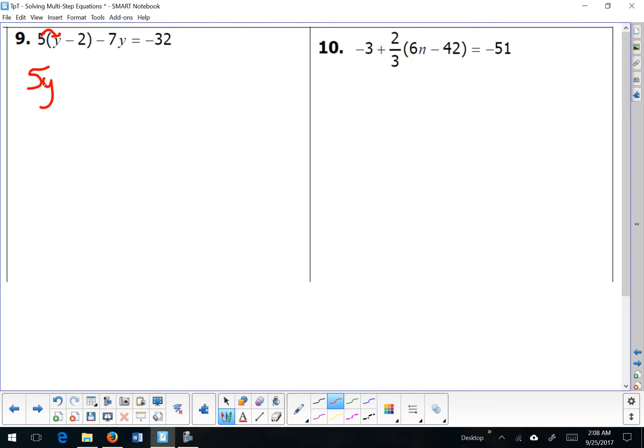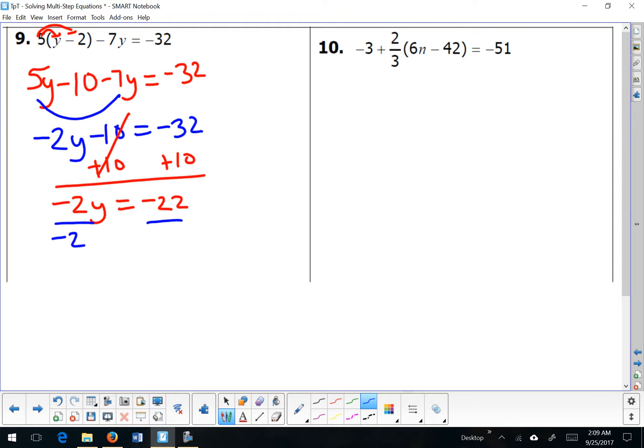5 times y is 5y, and 5 times minus 2 is minus 10. Now the parentheses have ended, so I'm not going to multiply anymore. The 5 is gone, and the parentheses are gone. Minus 7y comes down, equal sign comes down, minus 32 comes down. So my distributing is complete. Now step 2, combining like terms. In this problem I only have one pair of like terms, and that gives me a negative 2y. Everything else remains the same. Bring down the minus 10, bring down the equals, bring down the negative 32. And now I can use my inverses to cancel out my constant here and use my division property of equality to get my final solution.